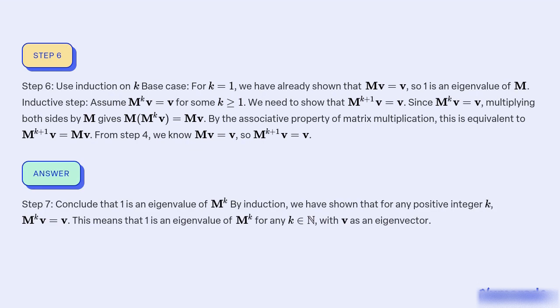Step 7: Conclude that 1 is an eigenvalue of M^k. By induction, we have shown that for any positive integer k, M^k v = v. This means that 1 is an eigenvalue of M^k for any k ∈ ℕ, with v as an eigenvector.